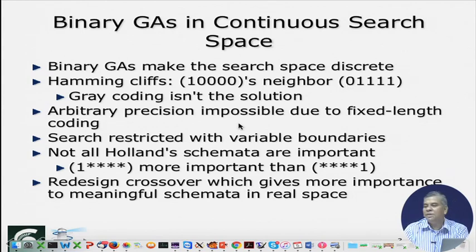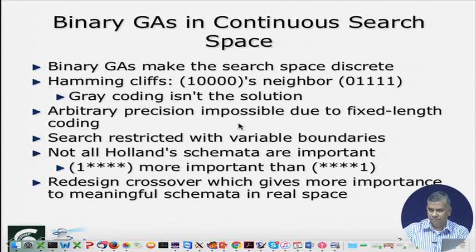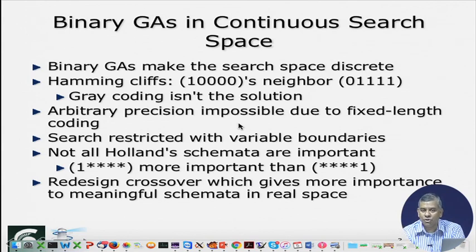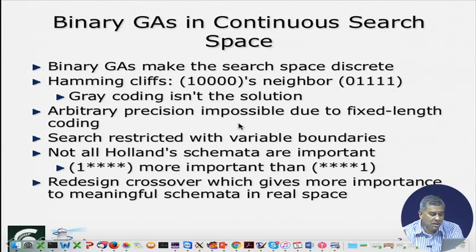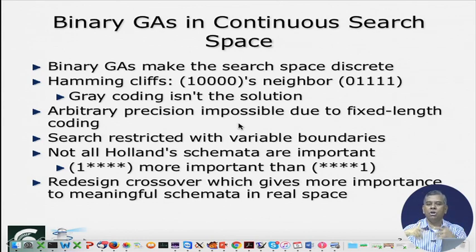Another thing is that arbitrary precision is not possible. The only way you can achieve arbitrary precision is by increasing the number of bits, and as I said then population size becomes proportionate to the number of bits. So if you have more and more bits you need more and more population size, which means your whole search will slow down. We see there are certain issues when you want to solve a real parameter problem with binary coded GA, so we want to avoid that and come up with a direct way of doing it.